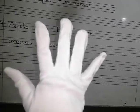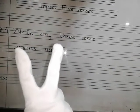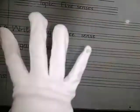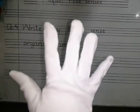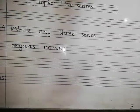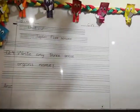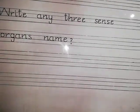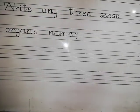One more time, listen to their names: eyes, nose, tongue, ears — and number five — skin. The skin comes from our touch sense. These are the five sense organs. From those five sense organs, we have to write three names.